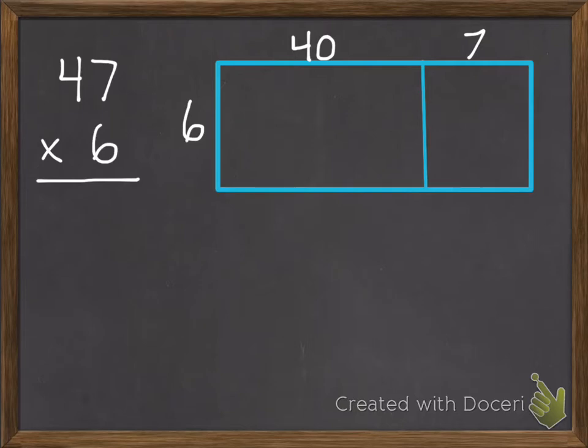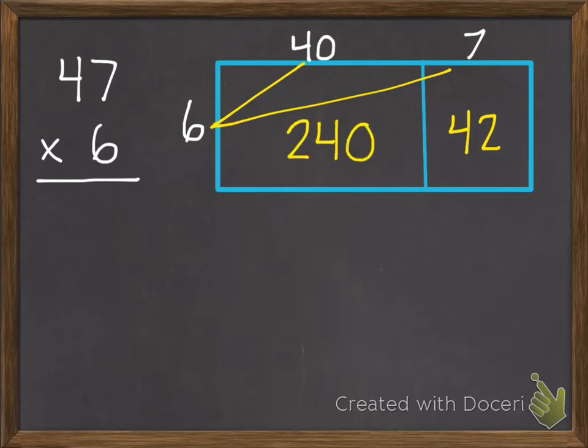Then we can multiply each of those parts and add their products. So I start by multiplying the 6 times the 7, which is 42. Then I multiply the 6 times the 40. And I can use the 0 trick. 6 times 4 is 24, plus 1 zero. So 240.